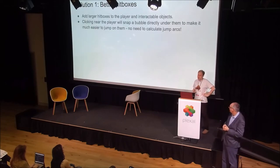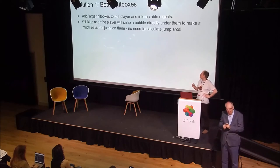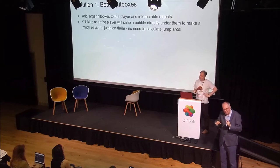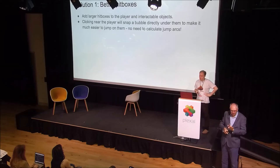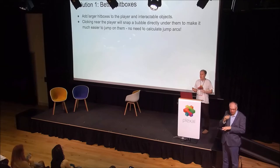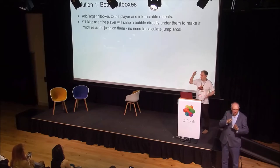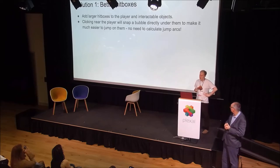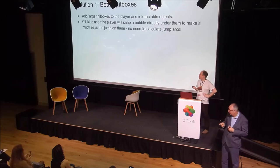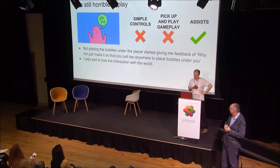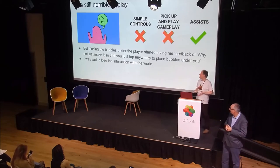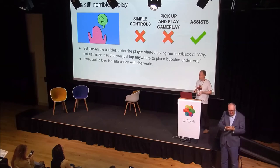My first attempt to fix this was to improve the hitboxes around all the player and interactable objects — the invisible zones that detect clicks or taps. Clicking near the player would snap a bubble directly under them to make it much easier to set up jumps, and similarly, clicking on fireballs would scoop them up without needing to be quite so accurate. However, it still required way too much precision, so I made no real progress on the pillars with this iteration.